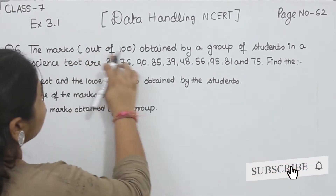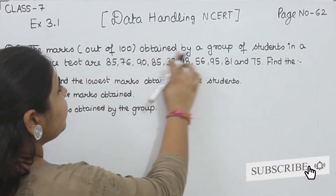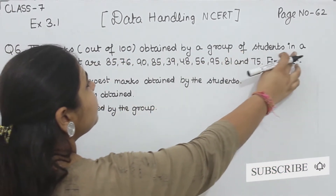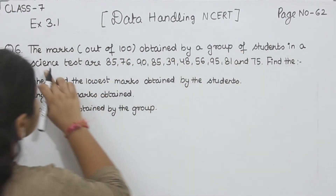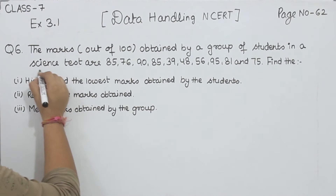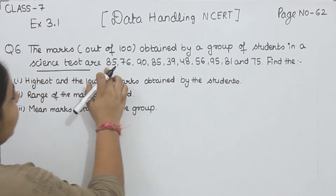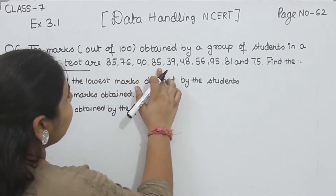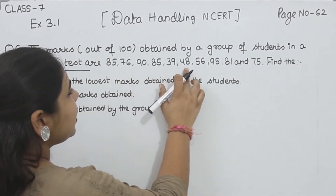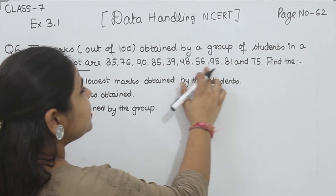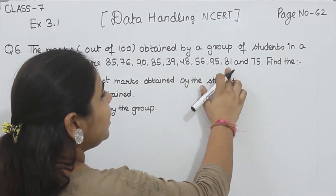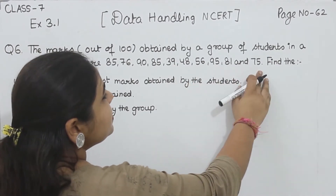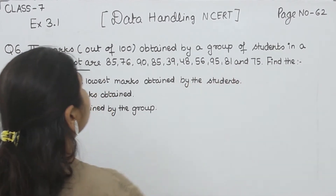The marks out of 100 obtained by a group of students in science tests are 85, 76, 90, 85, 39, 48, 56, 95, 81 and 75.